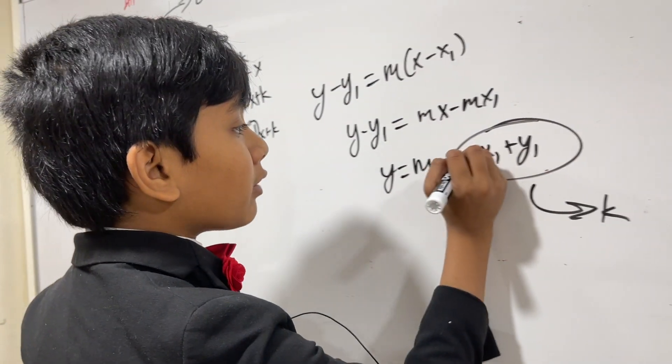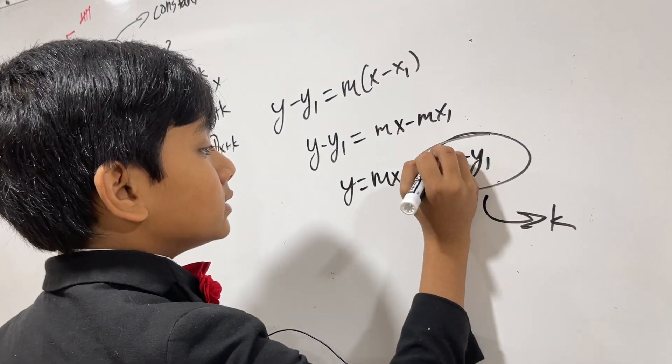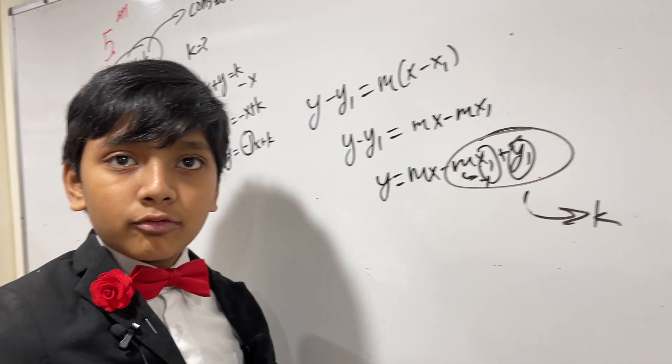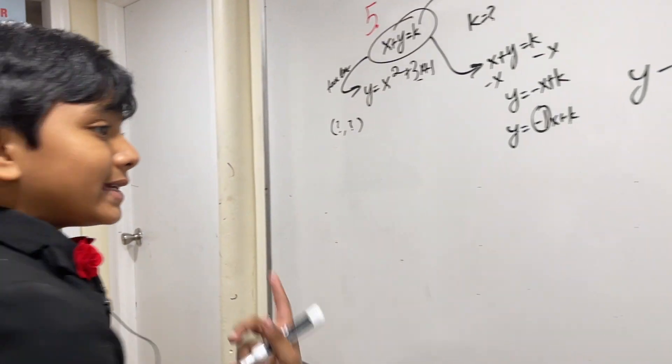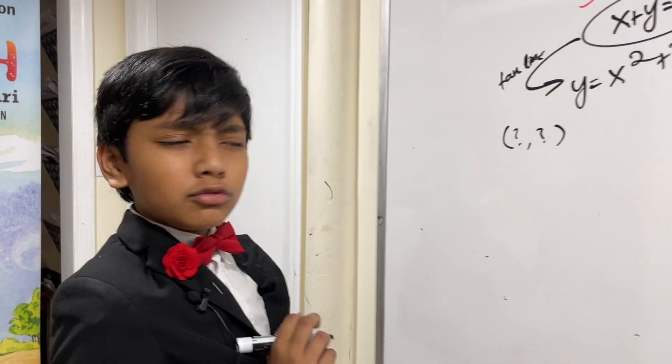So we already know our m, it's minus 1, and just knowing our x1 and y1 will get us our k. Really cool, isn't it?